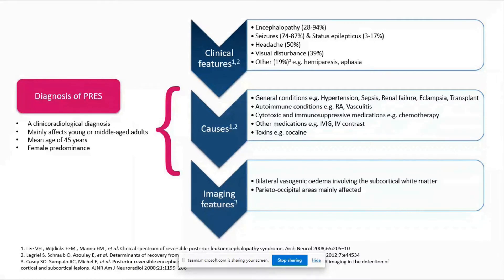Encephalopathy can be variable and can range from mild confusion and cognitive deficits to coma. Seizures tend to occur within the first 24 to 48 hours, and a minor percentage of patients can also go on to develop status, but patients with PRES rarely will present in status.